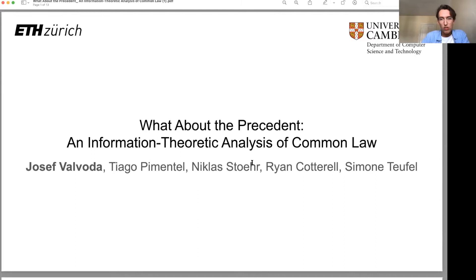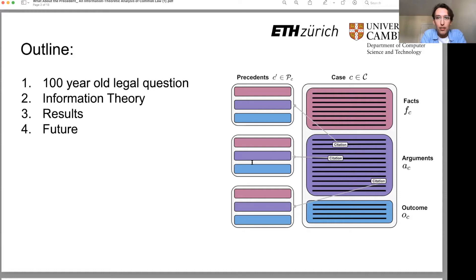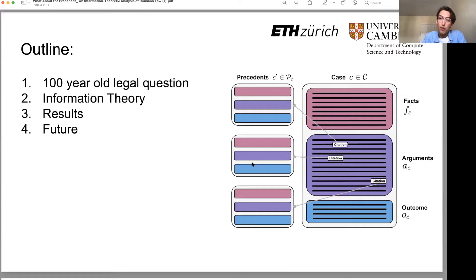I'll try to move through the legal part quickly, since many of you know more about law than I do, but I'll give you a bit of intuition about the European Court of Human Rights just in case you're a bit rusty. Then I'll talk more about information theory — how we operationalize this hundred-year-old legal question about the use of precedent — and then I'll talk about the results and the most exciting takeaway from this research going forward.